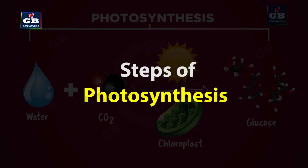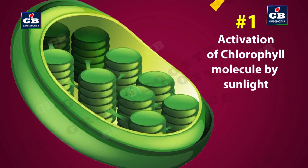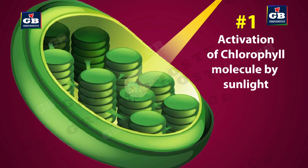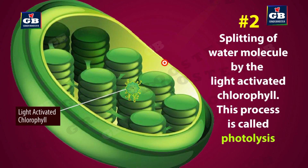Now let us see the different steps of the process of photosynthesis. Step 1: Chloroplasts have a green pigment called chlorophyll. This chlorophyll molecule gets activated by sunlight. Step 2: This light-activated chlorophyll splits the water molecules into hydrogen and oxygen.